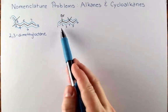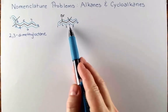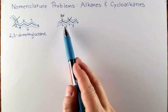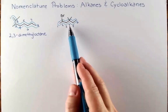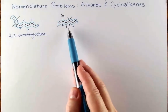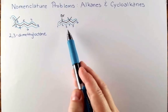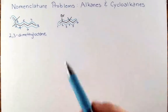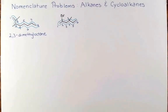We have a bromine and methyls, and we want to put these in alphabetical order. We have a dimethyl, but we ignore 'di' and 'tri' in our alphabetization. So this compound is 2-bromo-4,4-dimethylhexane.